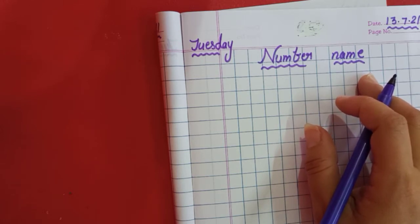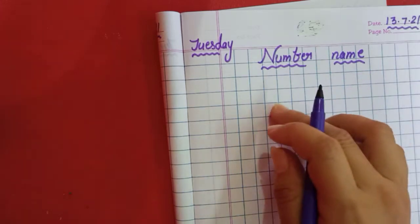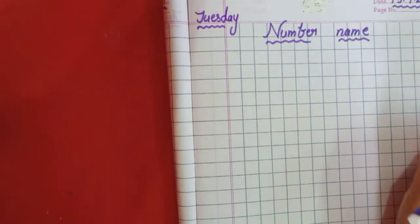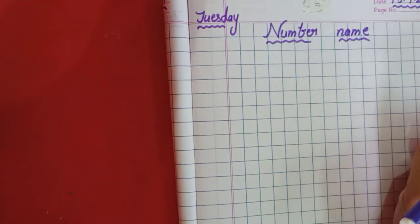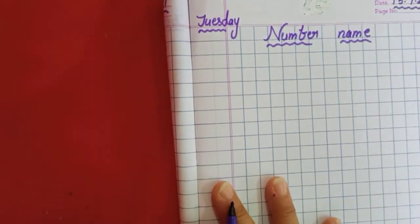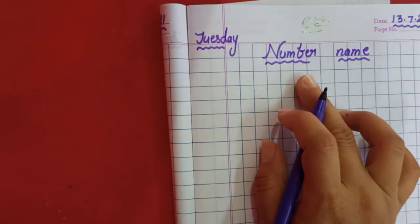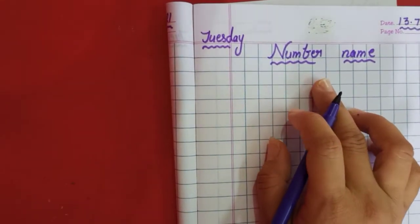Now I will give you the numbers and you have to write their name or spelling. The numbers will not be serial-wise — I will give you the mix-up numbers. Number name. Write with the sketch pen.